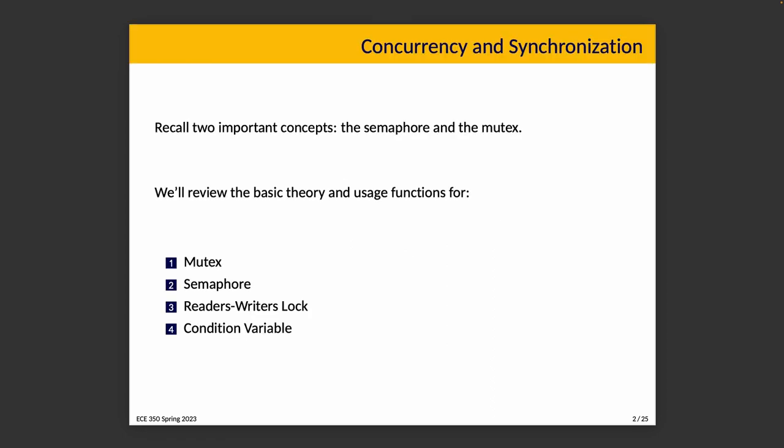When we were discussing concurrency and synchronization in the previous course, we talked about two important concepts: the semaphore and the mutex. We used them for multiple scenarios — mutual exclusion was one of them, preventing race conditions, making one thread wait for another, managing space in a buffer for the producer-consumer problem. We actually went through quite a lot of things.